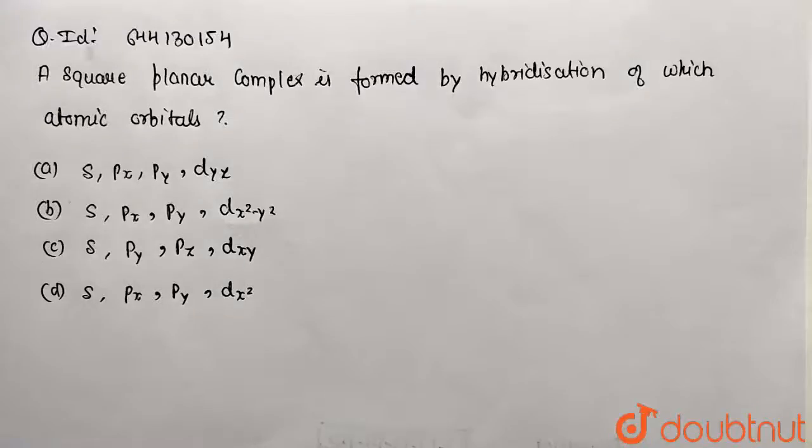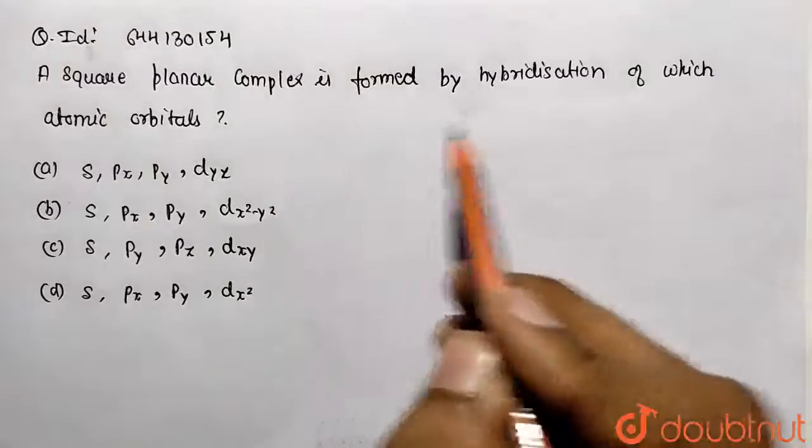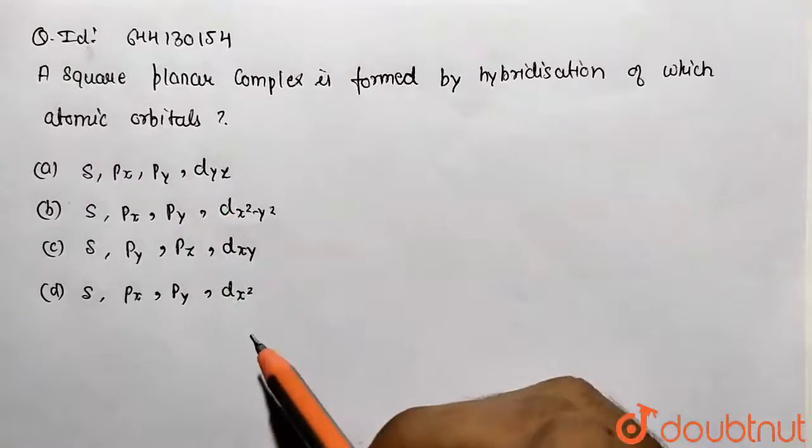Hello students, in this given question we need to answer: A square planar complex is formed by hybridization of which of the following orbitals?